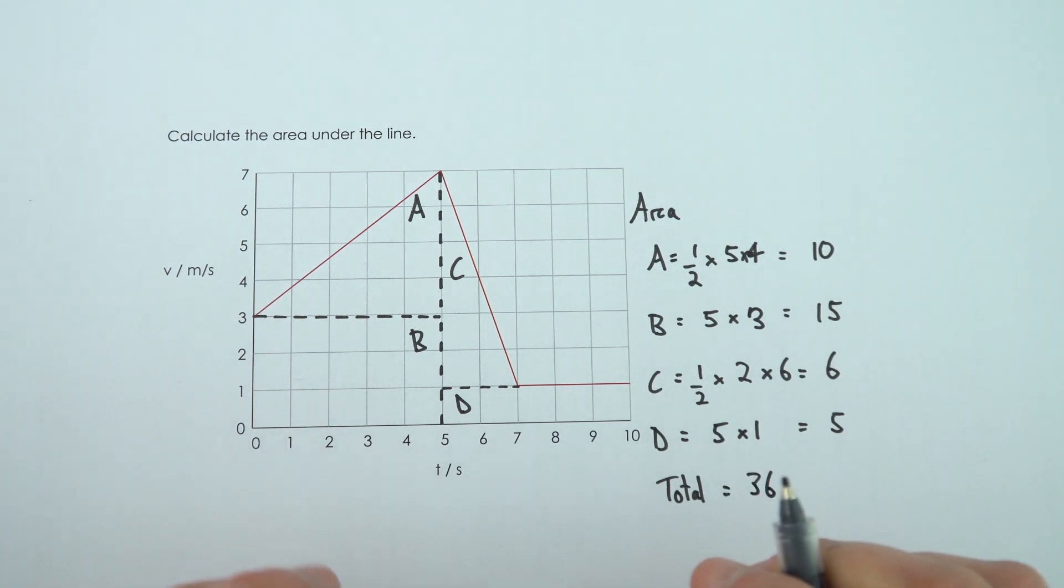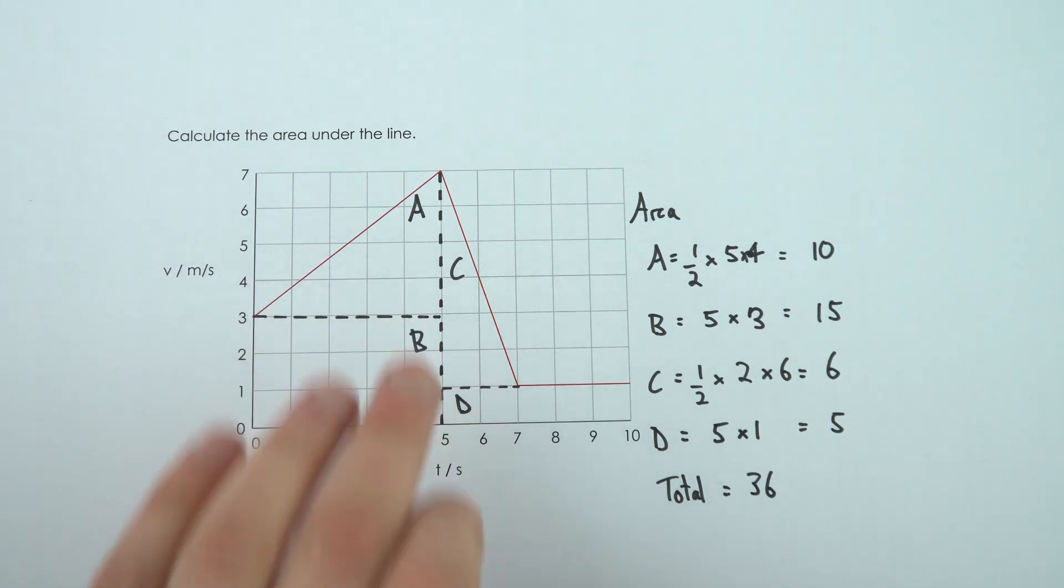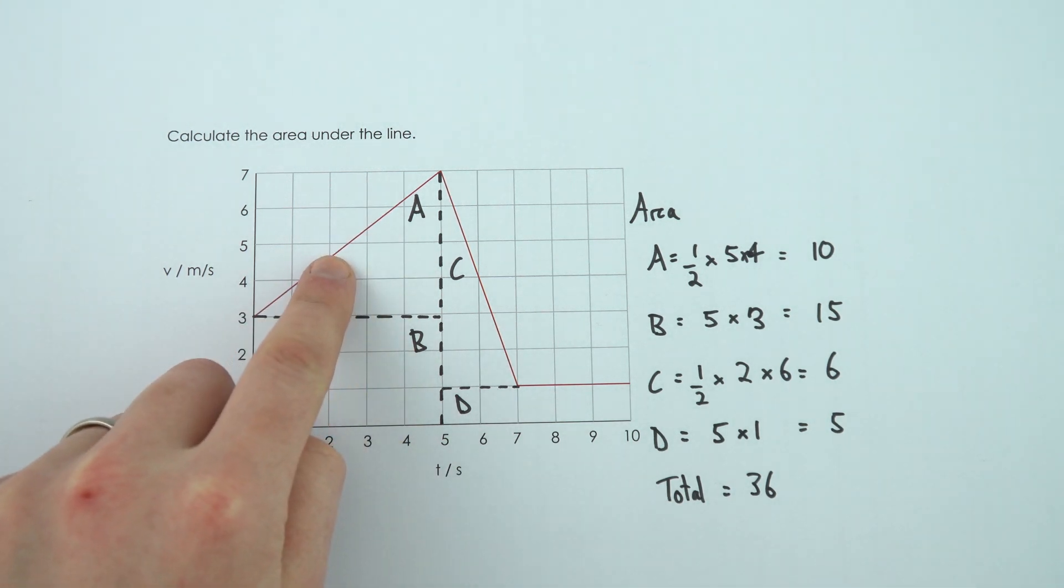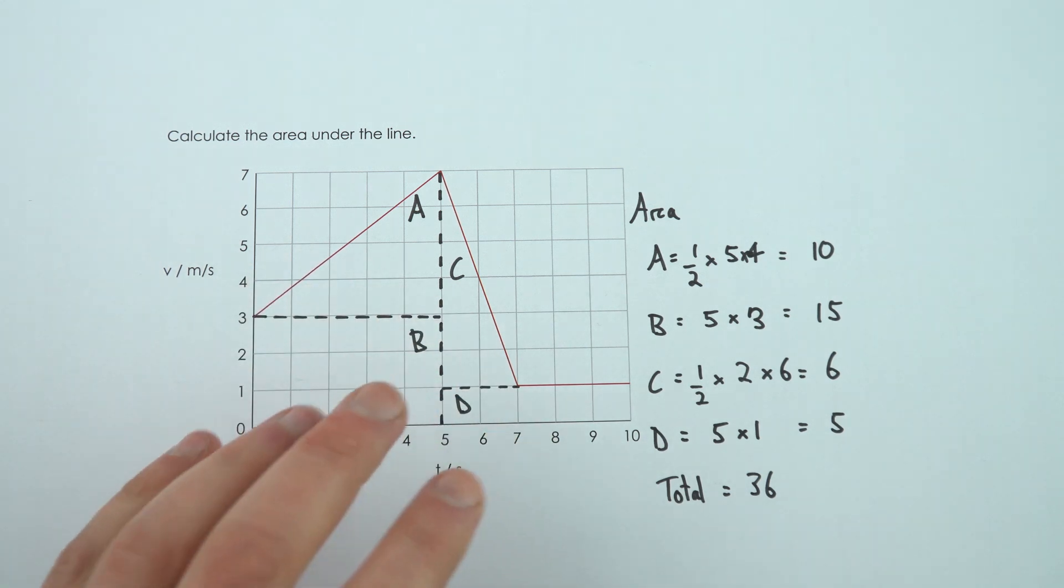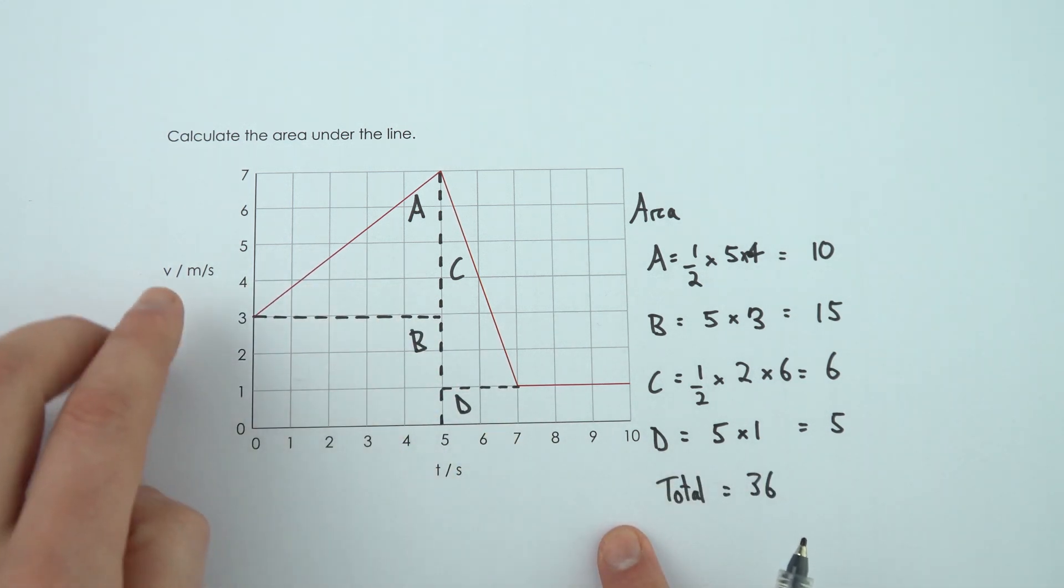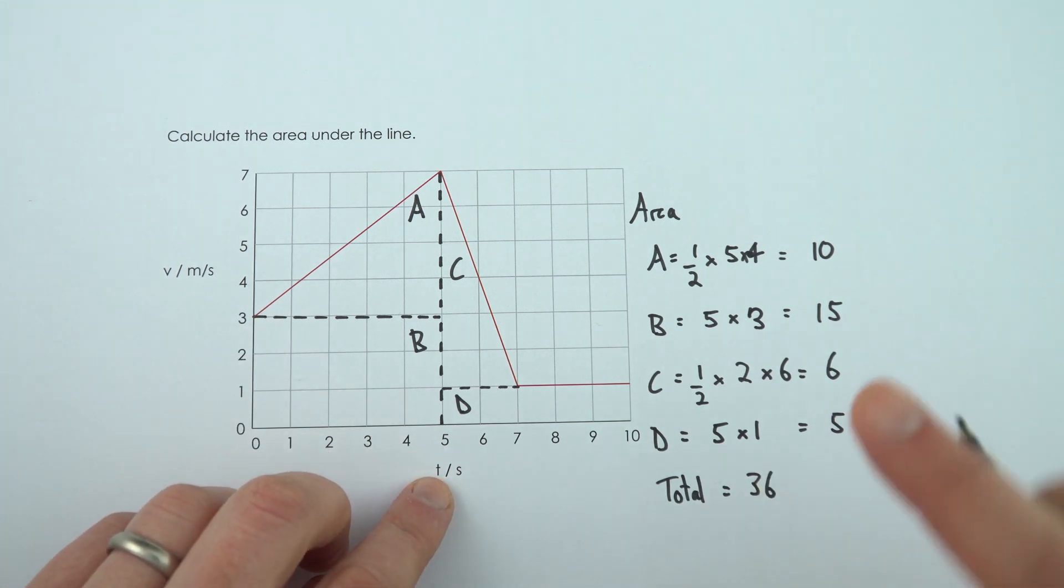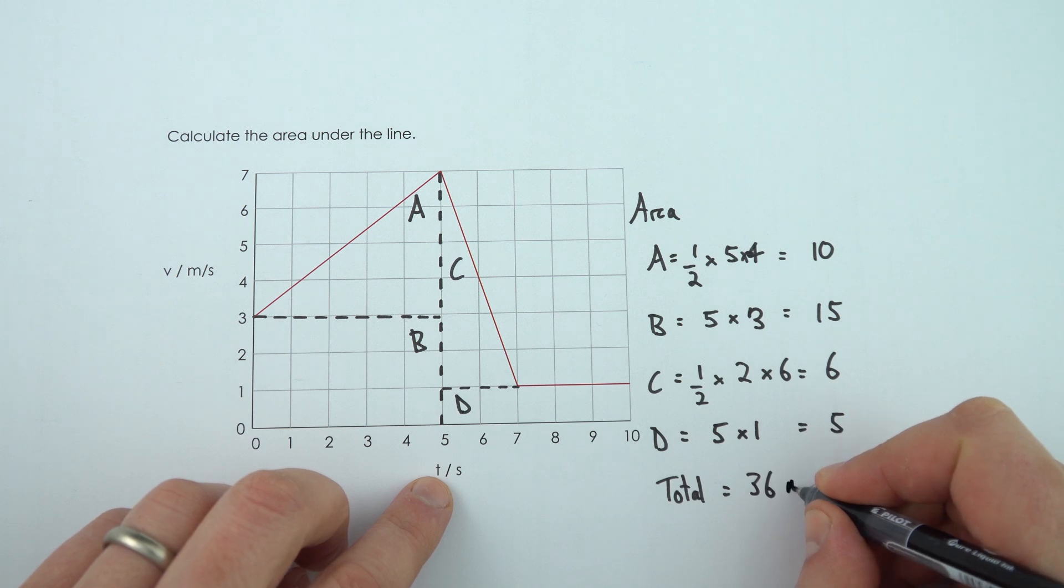The reason we often want to look at the area underneath the line on the graph is because this is really important, especially for velocity-time graphs, where actually the area means some kind of physical constant. For a velocity-time graph, the gradient of the line might be equal to the acceleration, but the area under that line is equal to the distance traveled. So here, because we've got a velocity or a speed in meters per second and a time in seconds, this means our distance is going to be in meters.